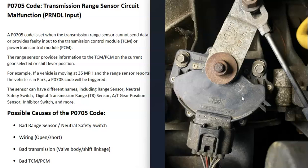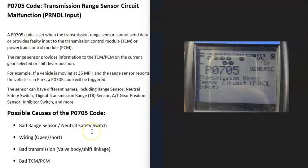When you get a P0705 code, for some reason the computer is seeing that something is wrong. For example, the vehicle is moving at around 35 miles per hour, but the sensor is reporting back to the computer that the vehicle is in park — so the computer knows there's a problem and triggers this P0705 code.